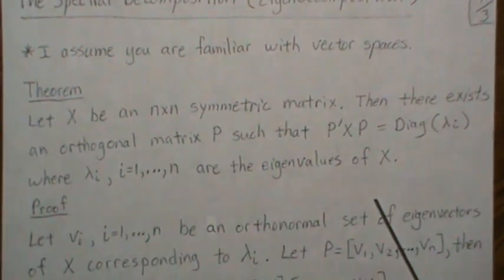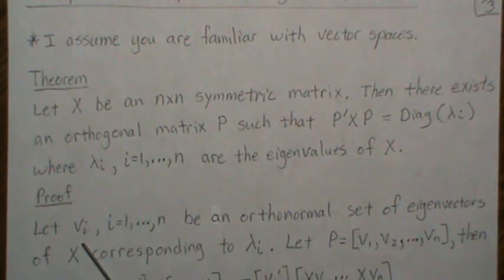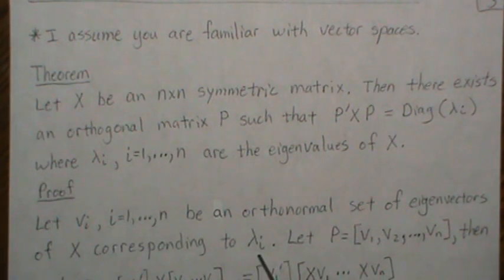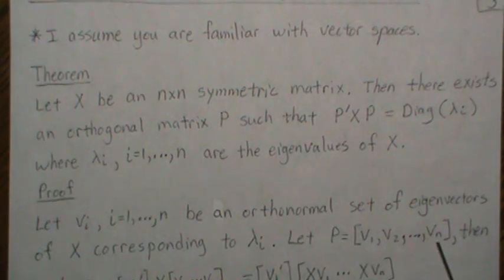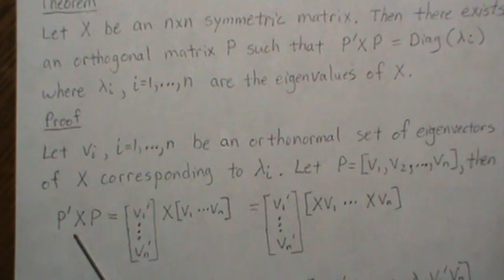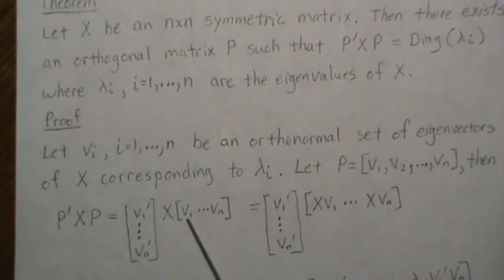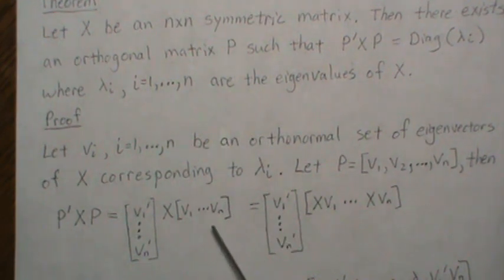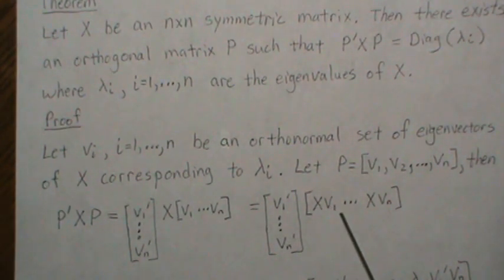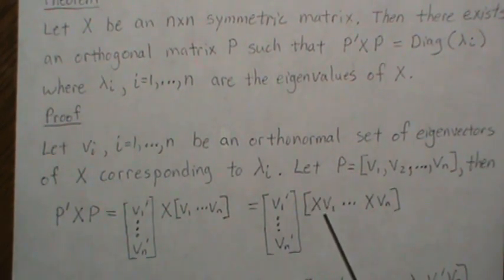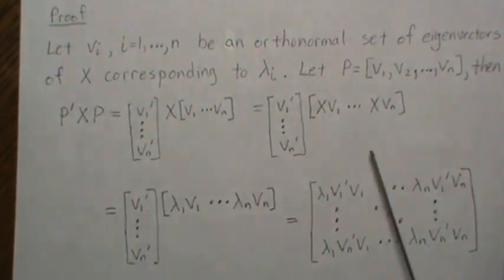The proof: let v_i be the orthonormal set of eigenvectors of X corresponding to each eigenvalue, and let P be the matrix of those eigenvectors — an n by n matrix. Then P^T X P equals the transpose of the eigenvectors times X times the eigenvectors. Since each v_i is an eigenvector, X v_i equals the eigenvalue lambda_i times the eigenvector.